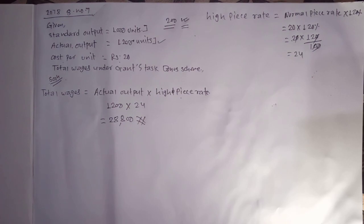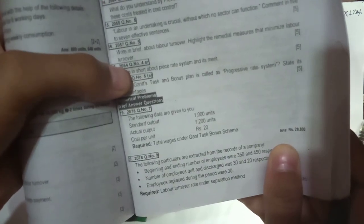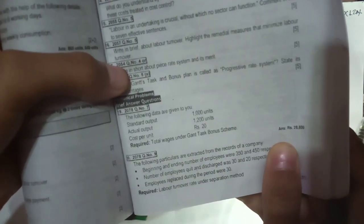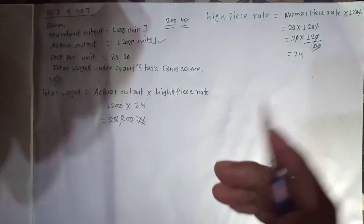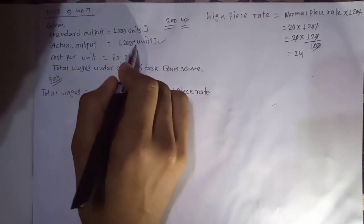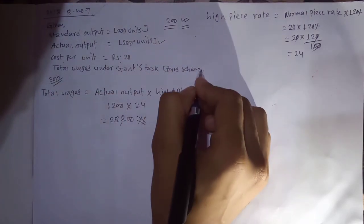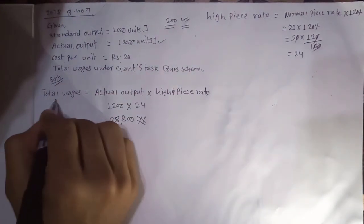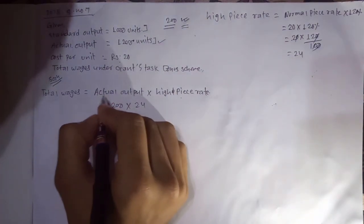Standard output: 1000 units. Actual output, cost per unit, total wages under grant task bonus scheme. Now, standard output, total output, actual output, high piece rate. How is the high piece rate?